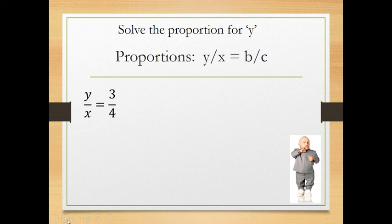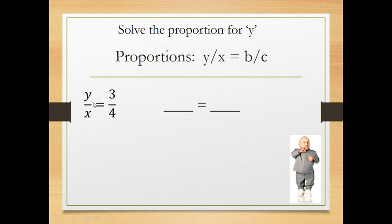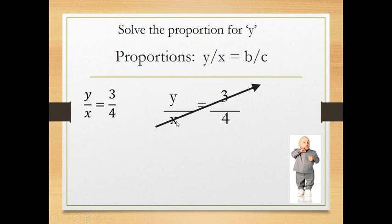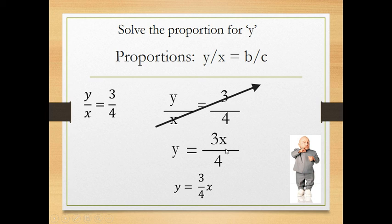Set the cross-products equal. Since y is already in the numerator, I'm going to multiply both sides by x to get y by itself — using inverse operations. I'm going to cross-multiply, keeping y where it is in the numerator, and multiply x times 3. So y = 3x/4, or more commonly written as y = (3/4)x. I have solved this proportion for y.